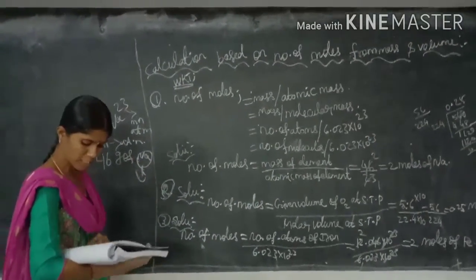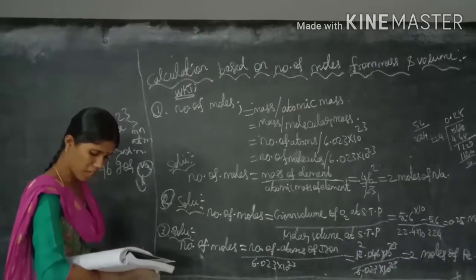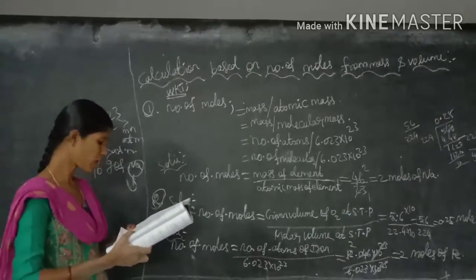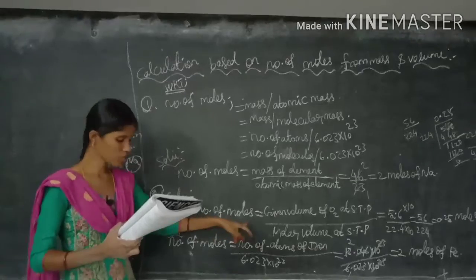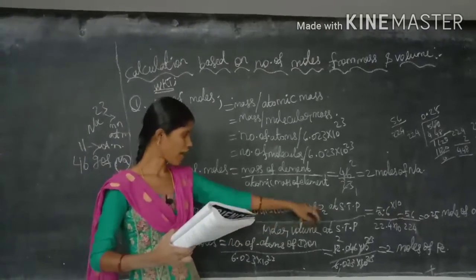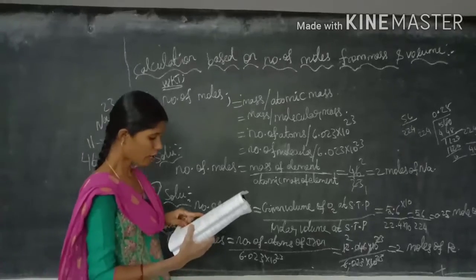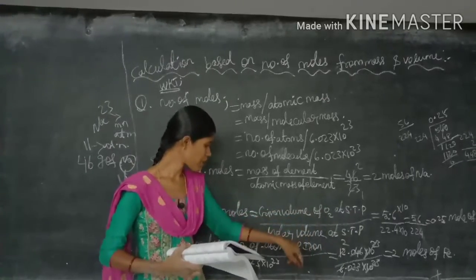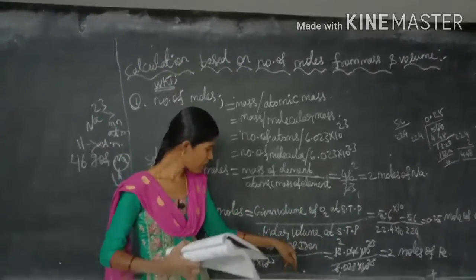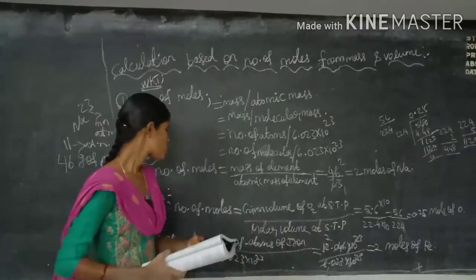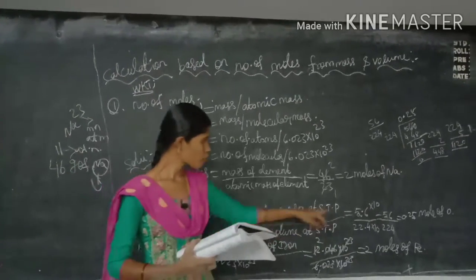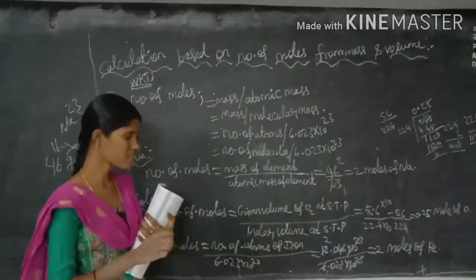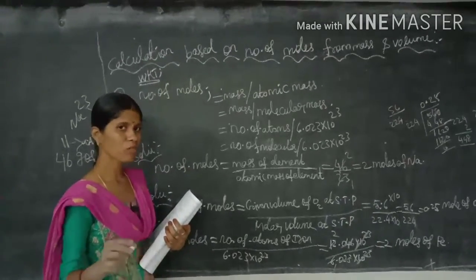Problem 2: Find the number of moles of 5.6 liters of oxygen at STP. The formula is: number of moles = given volume ÷ molar volume at STP. The given volume is 5.6 liters and the standard molar volume at STP is 22.4 liters. To simplify, multiply both by 10: 56 ÷ 224, which makes it easier to divide.